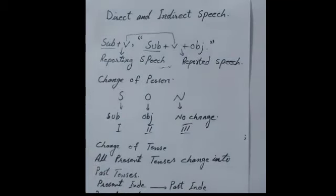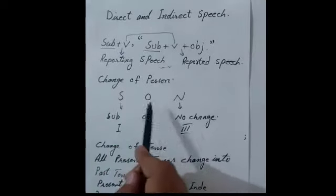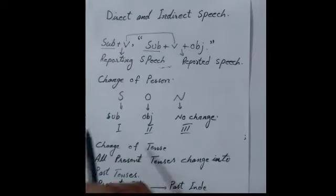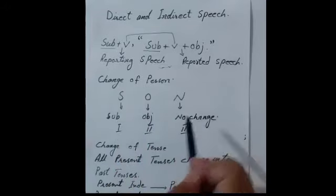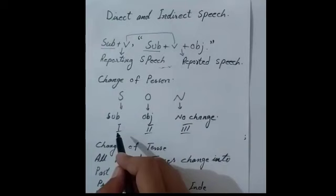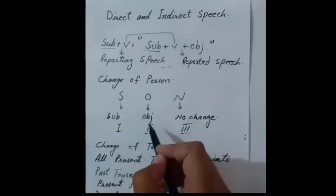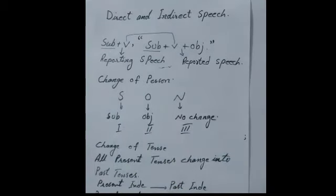Now, when converting to indirect speech, we do a change of person and tense. For the change of person: the first person is changed according to the subject of the reporting verb, the second person is changed with the object, and the third person has no change.